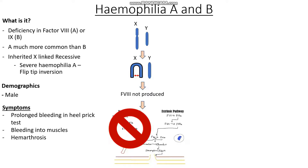This can have a massive impact on quality of life. Lastly, we may see things like extensive and large bruising all over the body, because remember, we are not able to stabilise our platelet plug.